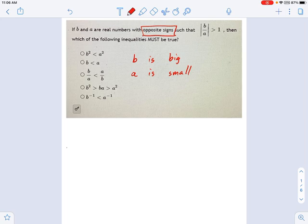So that's kind of important too. That means b is plus or minus big and a is plus or minus small. Okay, so kind of a weird way to phrase things, but that's what we have.